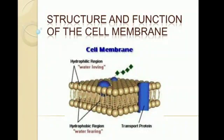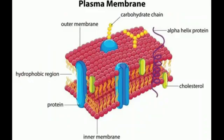Welcome students. Today's topic is the structure and function of the cell membrane. The cell membrane is also known as the plasma membrane or living membrane. It is present in each and every cell — in plant cells and in animal cells — but in the case of the plant cell, it is surrounded by the cell wall.